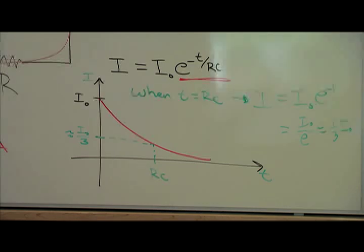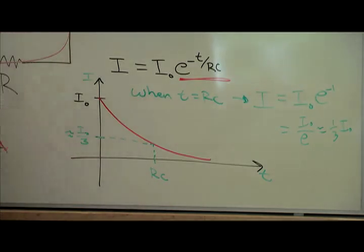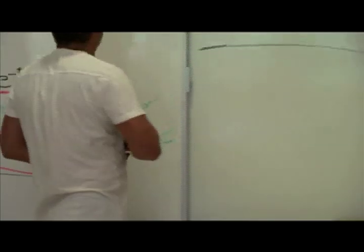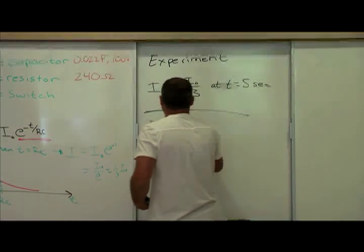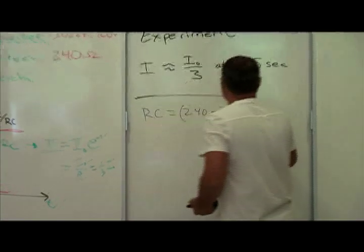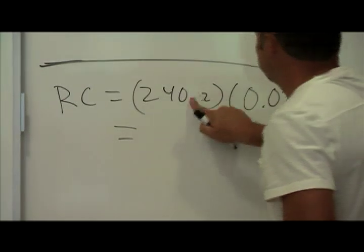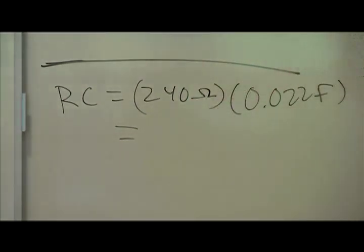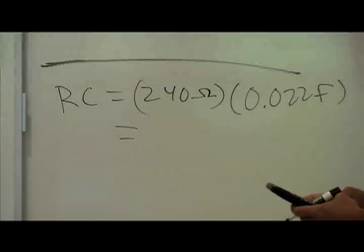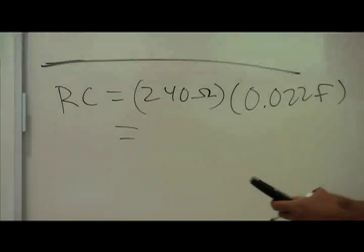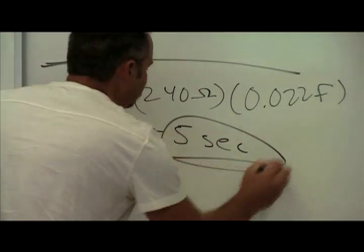Great. Well, let's calculate our RC time constant and see if it comes out to about 5 seconds. And we have our values here. R is just 240. So RC is just 240 ohms multiplied by 0.022 farads, and an ohm times a farad gives you seconds. So let's plug that in, 0.022 times 240, and it's about 5 seconds. Pretty good. That's what we saw.